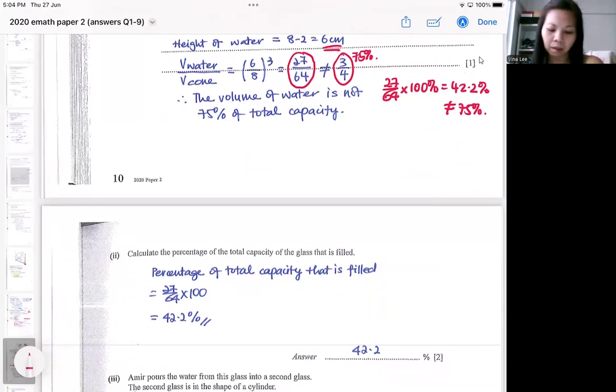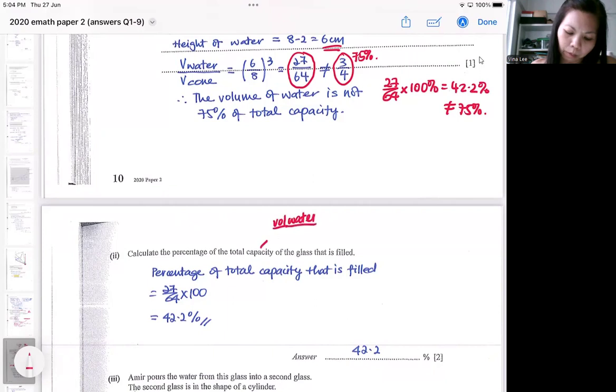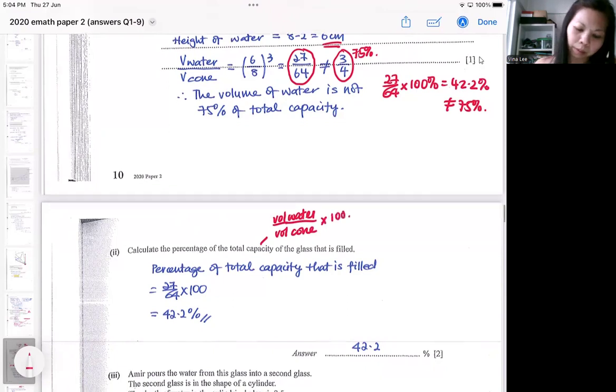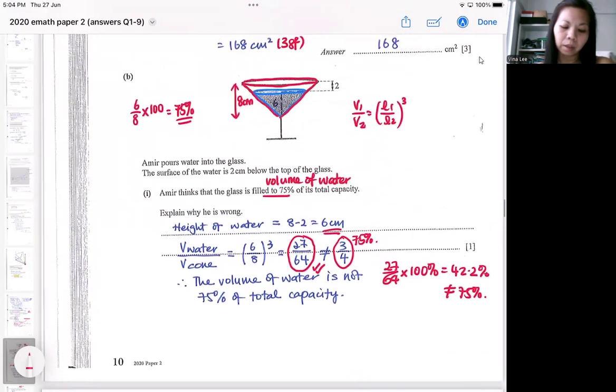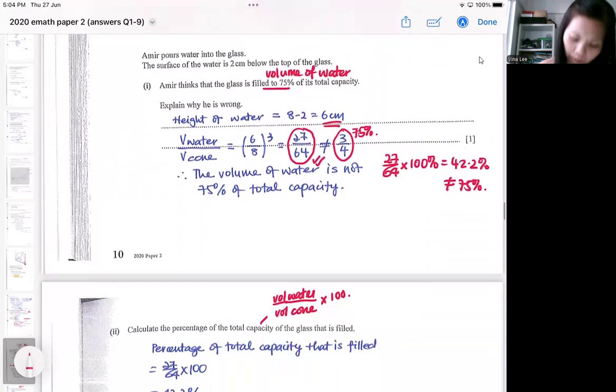Okay, so you can further explain that if you want to. And that will actually help you in the second part. So what is the percentage of the capacity of the glass? That means, what is the volume of the water compared to the volume of the cone? So that means I can just use the volume ratio that I've gotten here to calculate the percentage. So if you are aware that it is actually similar ratio, this part can be done easily.